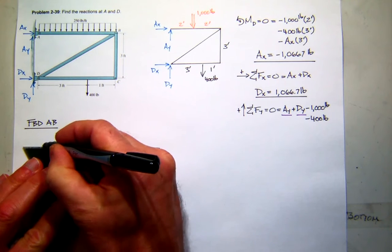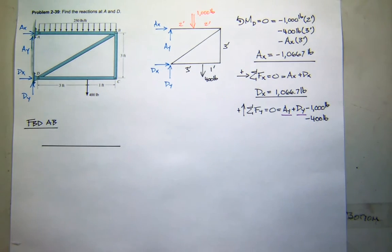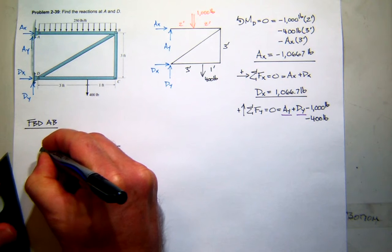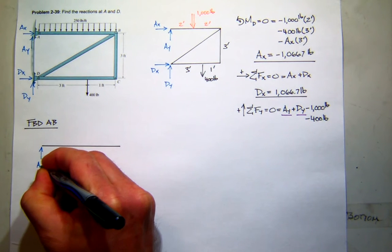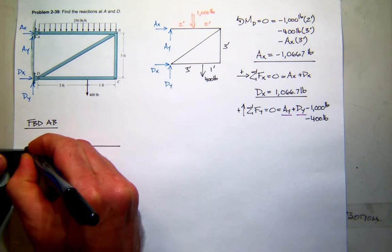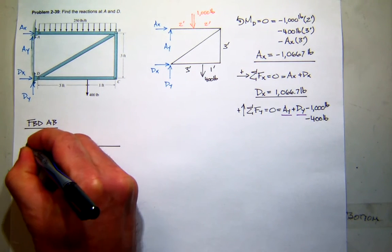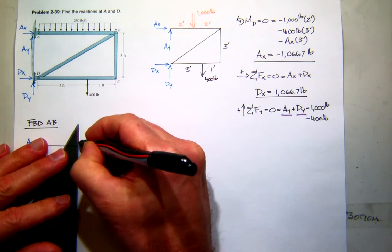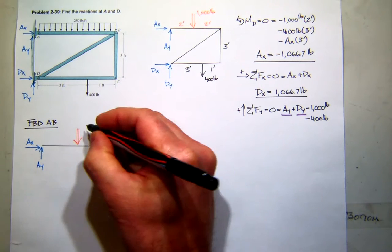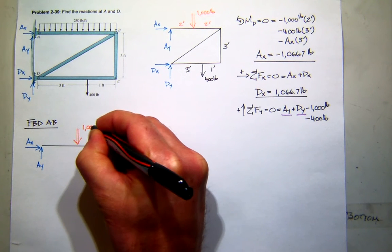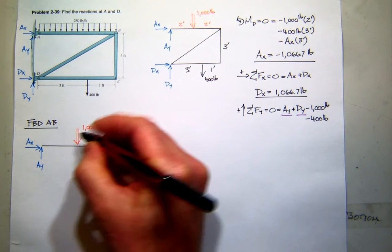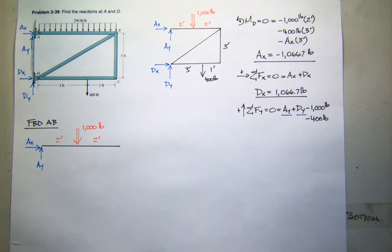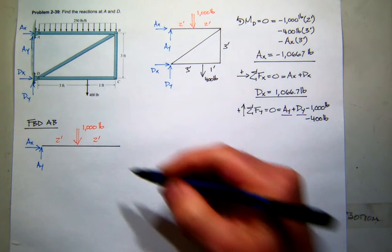Well, first of all, there's the geometry for AB. There's Ay. There's Ax. Let's see. We've already talked about the concentrated equivalent along the top being 1,000 pounds and being right in the middle, which is 2 feet and 2 feet. So now we have to look at what's happening at B.